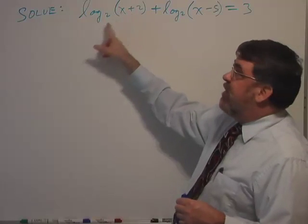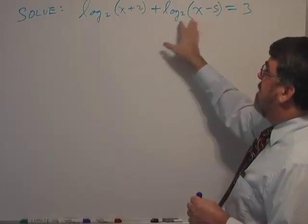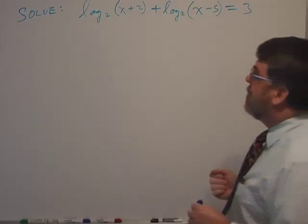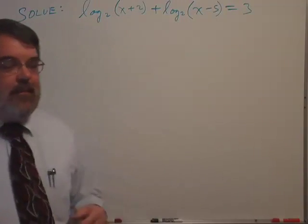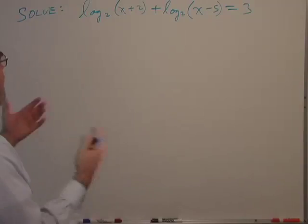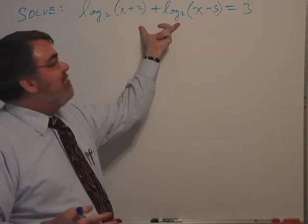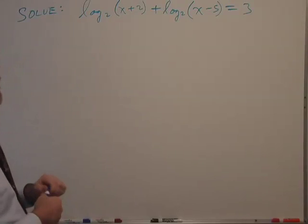Let me give you a kind of typical logarithmic equation. Solve log base 2 of (x+2) plus log base 2 of (x-5) equals 3. My first step is to see that I can combine these two logarithms into a single logarithm, and that turns out to be pretty useful.